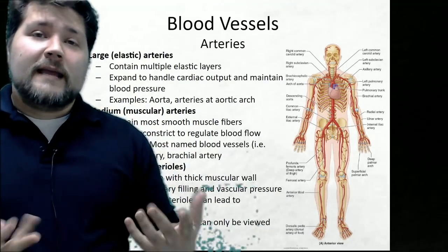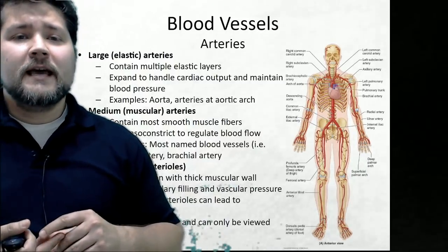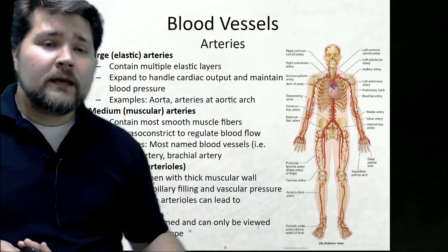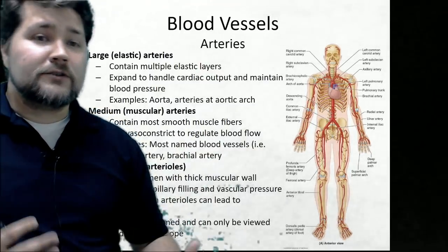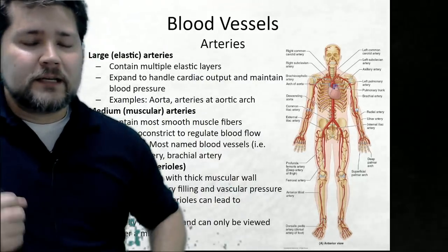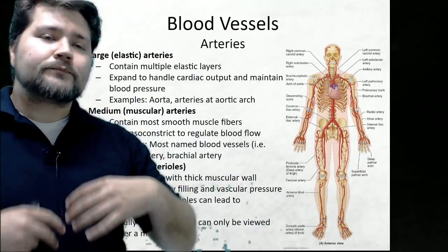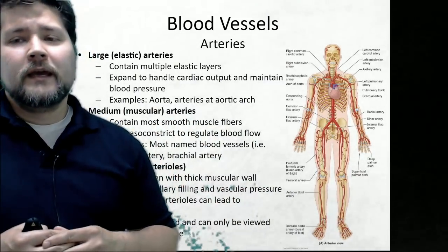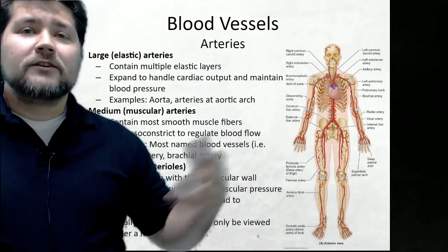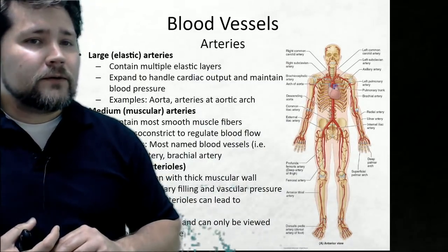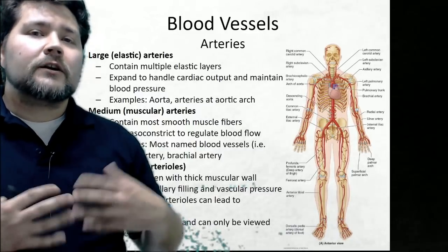Medium arteries are most of your named arteries — the muscular arteries. Once you get off the branches of the aorta, a lot of those are muscular arteries, with a lot of smooth muscle fibers in their tunica media. This helps regulate blood flow — for example, during a fight-or-flight response, arteries supplying the digestive tract can vasoconstrict, allowing more blood flow to go to the arms and legs.